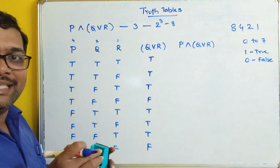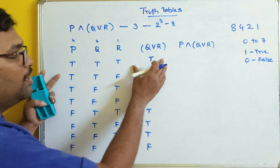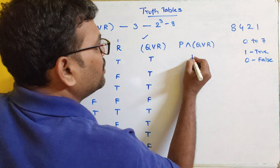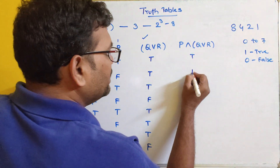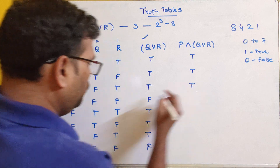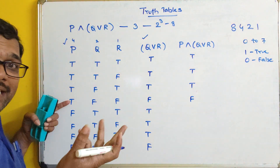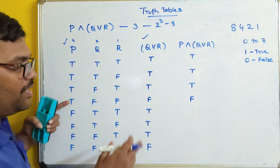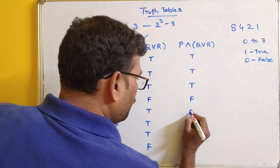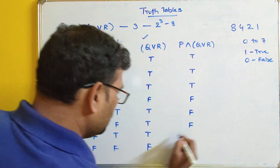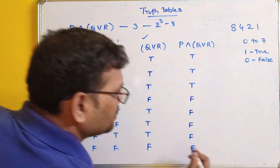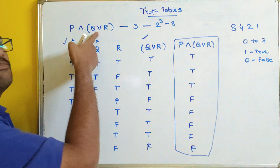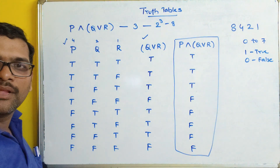Now we apply conjunction for P ∧ (Q ∨ R). P∧T=T, T∧T=T, T∧T=T, T∧F=F — for conjunction, if any proposition value is false the result is false. Then F∧T=F, F∧T=F, F∧T=F, F∧F=F. This is the truth table for this compound proposition.